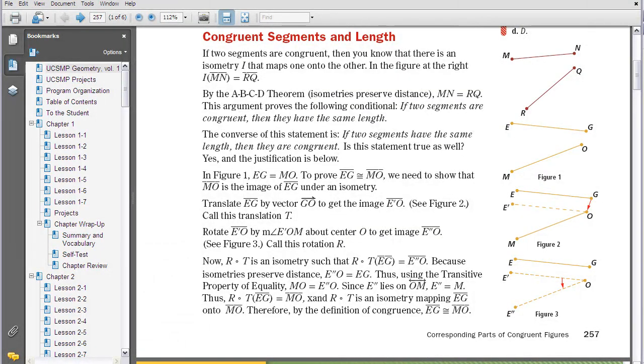So if you look at the segment EG here, the statement is that EG is equal in length to MO. So what we want to do is prove that it's actually congruent as well. So if you take EG and you translate it by a vector of GO, as you can see right here by this red arrow, we can see that it makes E prime O prime.